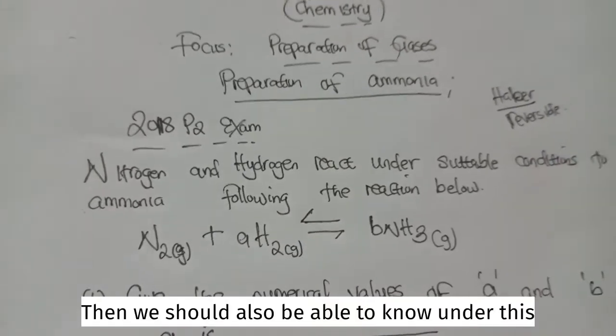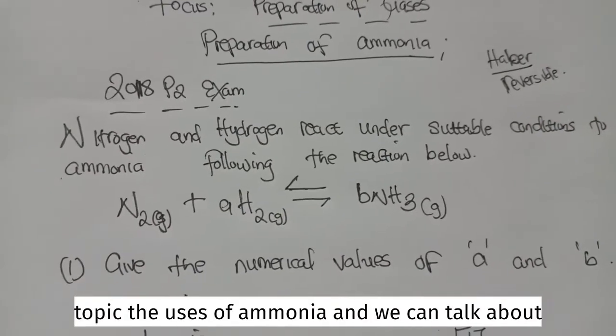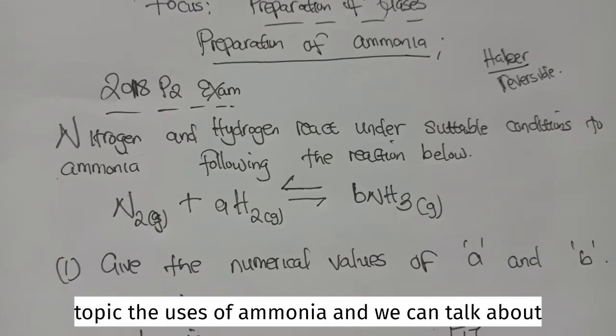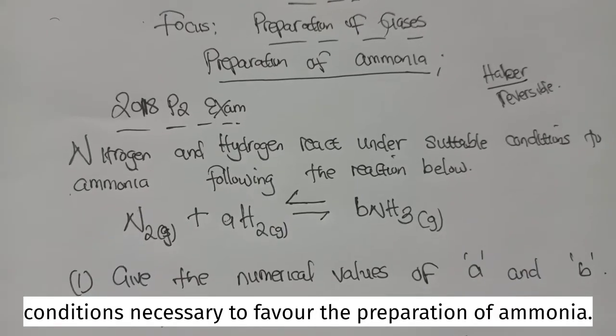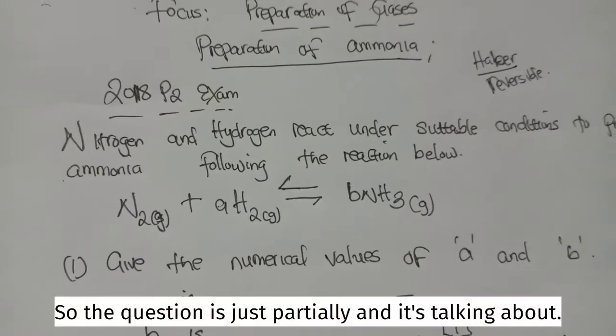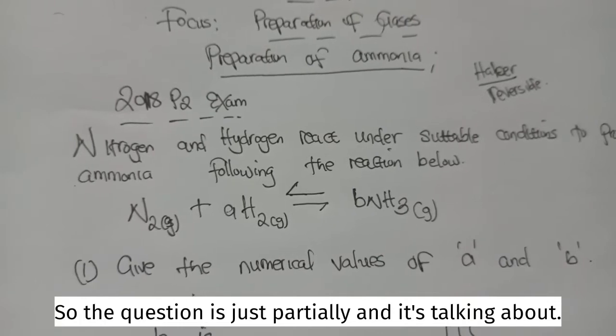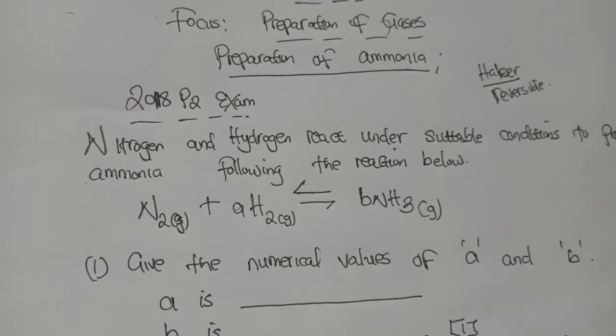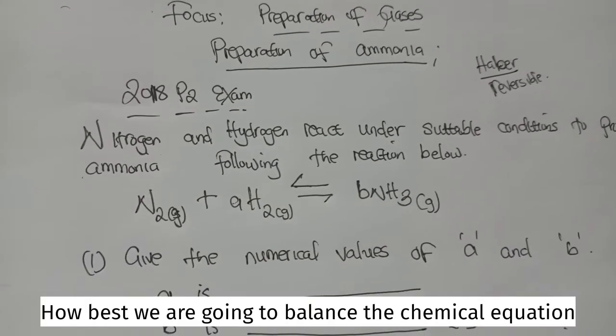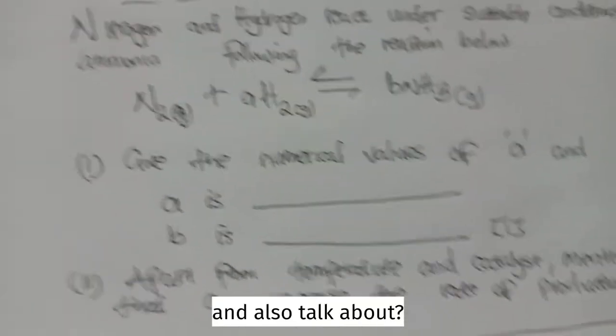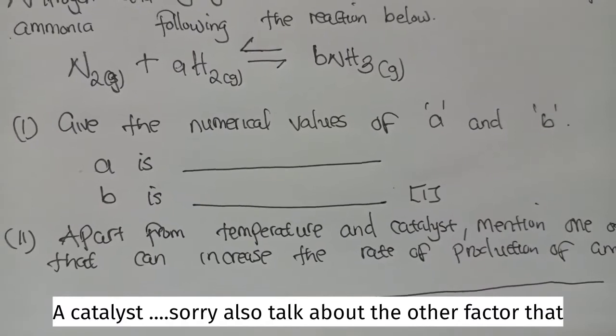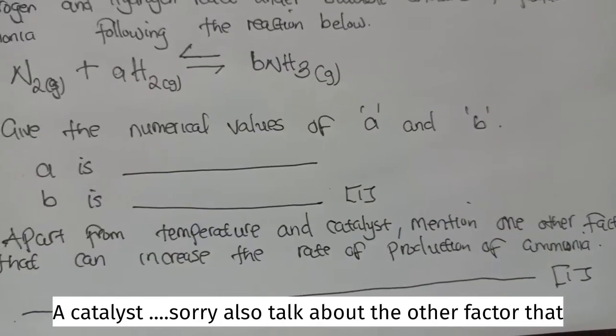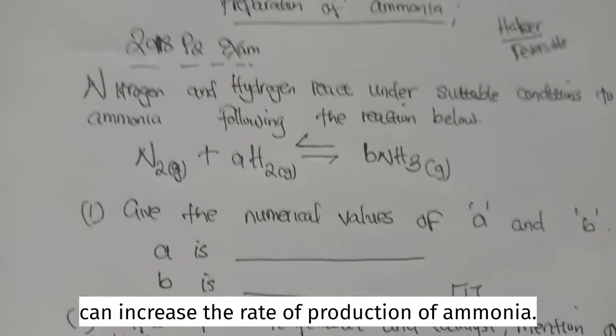Then we should also be able to know under this topic the uses of ammonia, and we can talk about conditions necessary to favor the preparation of ammonia. So, the question is talking about how we are going to balance the chemical equation, and also talk about other factors that can increase the rate of production of ammonia.